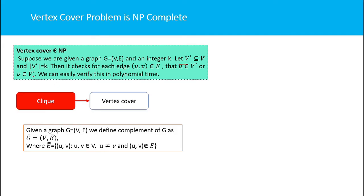To verify: suppose we are given a set of vertices V' of size K. We can check for each edge (U, V) whether U belongs to V' or V belongs to V'. That is, we can easily verify whether the given set of vertices covers all edges of the graph in polynomial time. So the vertex cover problem is verifiable in polynomial time — it is an NP problem.